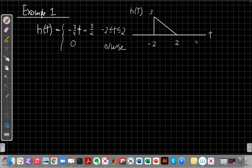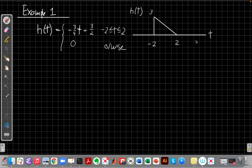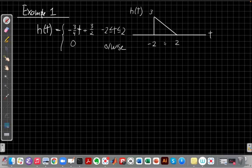So let's look at an example. In this example, we have an impulse response that's minus three quarters of T plus three halves for the region from minus two to plus two, and it's zero otherwise. I've sketched the impulse response here too. So it's a little descending triangle that starts at T equals minus two and goes down to two.